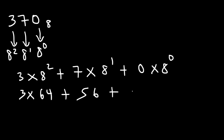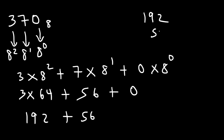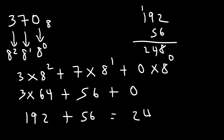8 squared is 8 times 8, which is 64, and 7 times 8 is 56, and 0 times anything is 0. Now 3 times 64 is 192, and then 192 plus 56: 2 plus 6 is 8, 9 plus 5 is 14, carry the 1, and so we get a total of 248 in the decimal system.